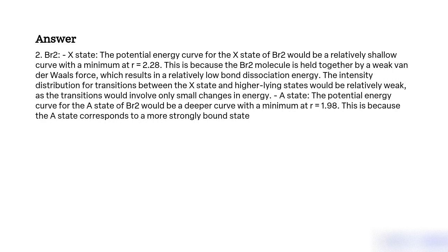BR2 A state: The potential energy curve for the A state of BR2 would be a deeper curve with a minimum at R equal to 1.98. This is because the A state corresponds to a more strongly bound state of the molecule.